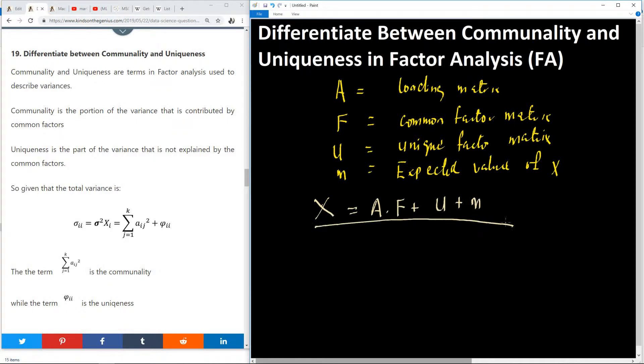This is the basics of factor analysis. Now what are all the meanings of all these things? I'm not going to go further to explain it bit by bit. Let's now go to communality and uniqueness.